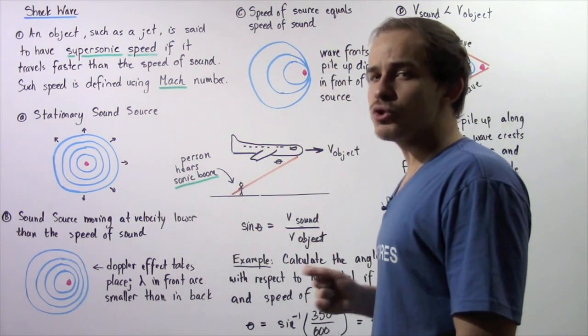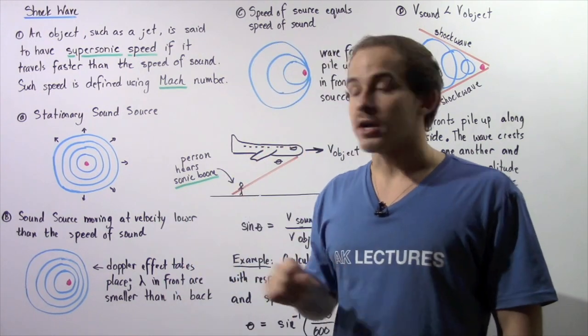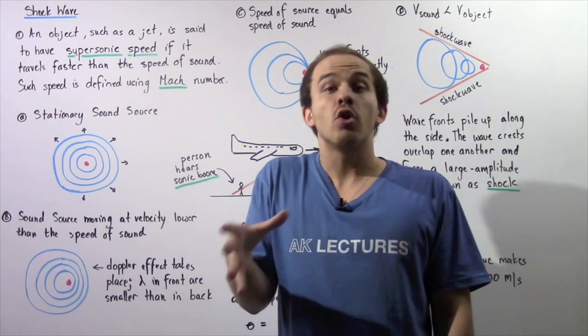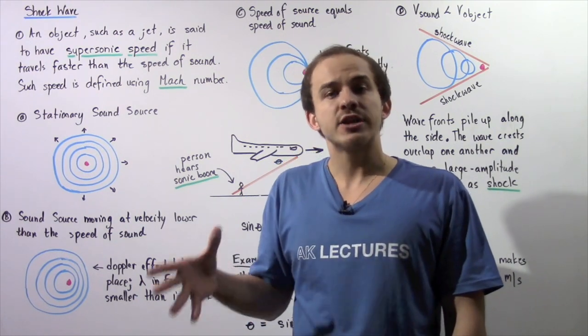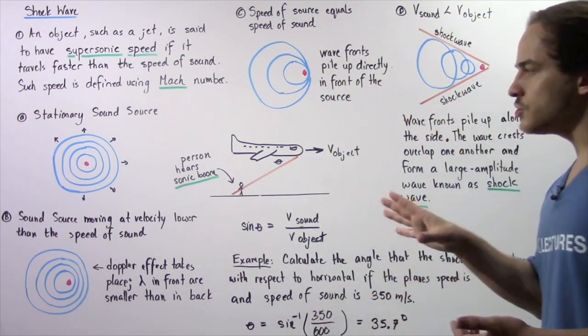And such speed is usually defined using something known as the Mach number. The Mach number is simply the ratio of the velocity or the speed of the object to the speed of the sound wave.